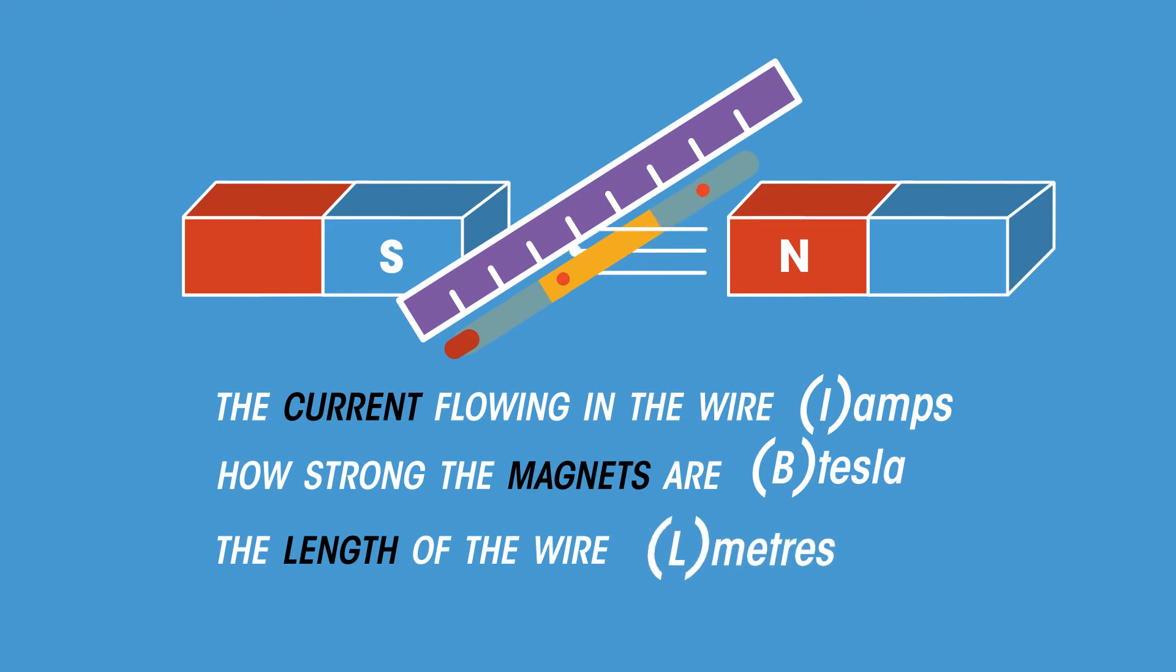The length of the wire, shown in yellow, that is in between the magnetic poles. Let's look at each individually before looking at how they relate to each other in an equation.